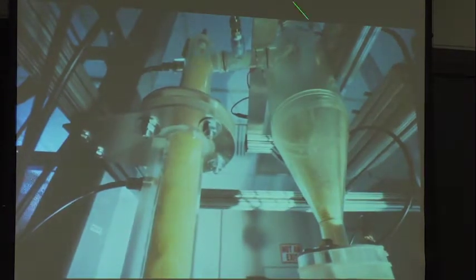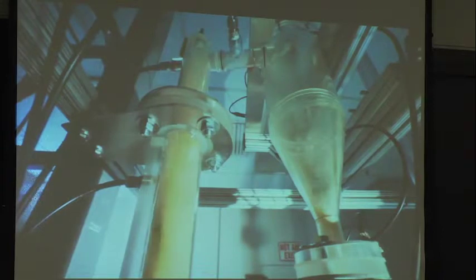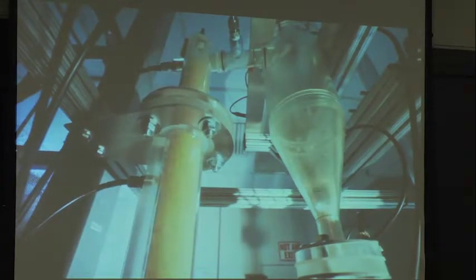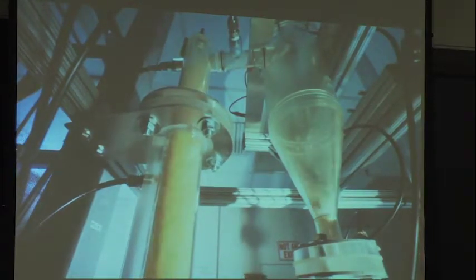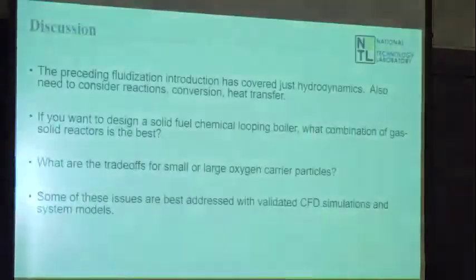Here you can see the cyclone separating that material out, dropping it down into — in chemical looping, you would have a loop seal right there. So you get a sense of the unsteadiness involved in the process and how the solid actually moves through the system.